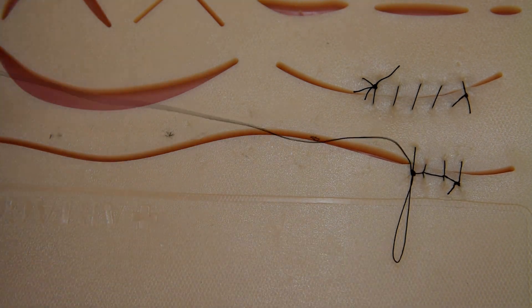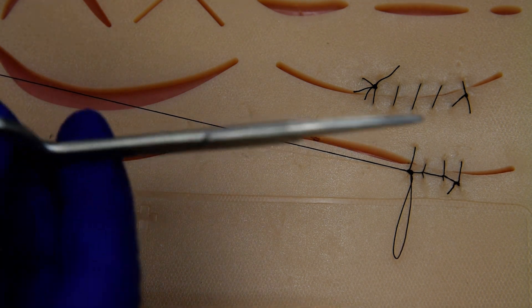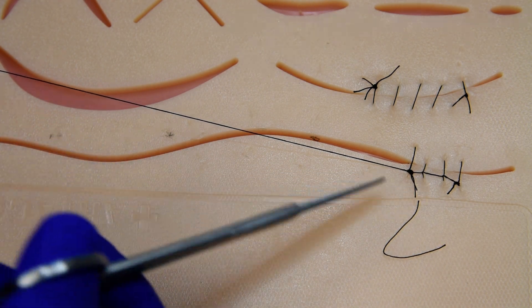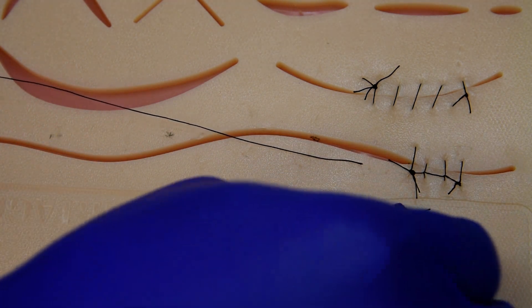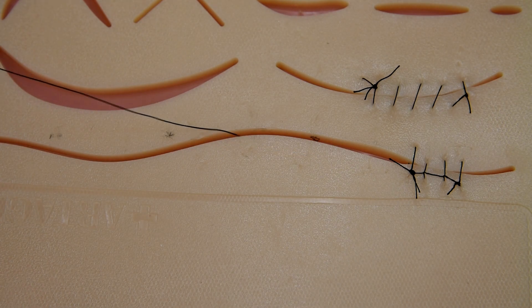So in effect, we have, in this example, four little knots that are a little less likely for the incision to open, compared to the simple continuous with the two knots.